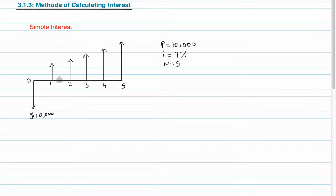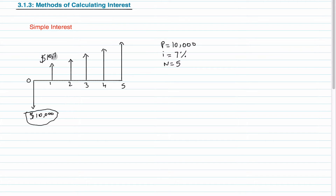There are basically two methods of calculating interest: simple interest and compound interest. In simple interest, if you go to the bank and you deposit ten thousand dollars, at the end of year one you will have seven hundred dollars in interest — because seven percent of ten thousand dollars is seven hundred — so your total at the bank would be ten thousand seven hundred.